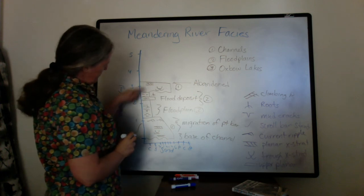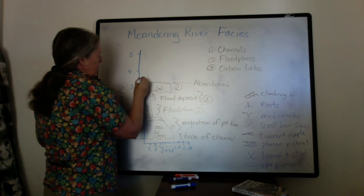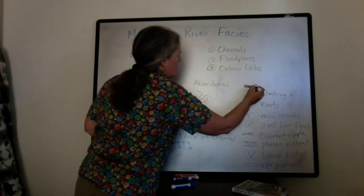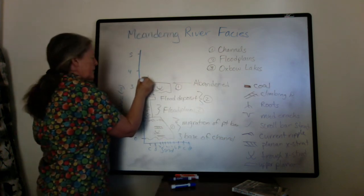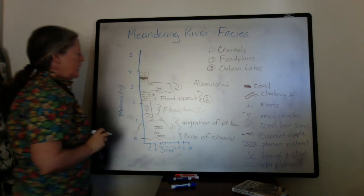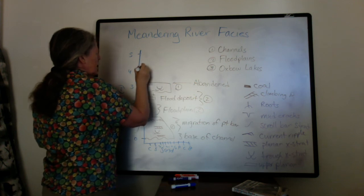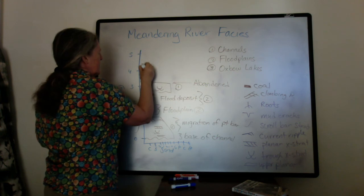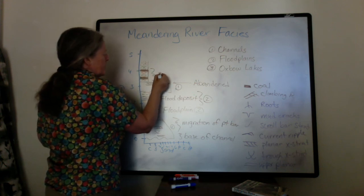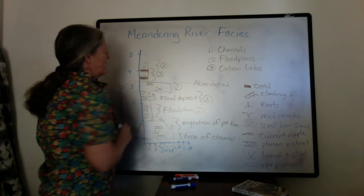The lake deposits are going to be very fine-grained with some mud but a lot of organic matter — I'll show bands of coal where you have very little mud coming in. Eventually the lake will fill in, and you might start getting some mud cracks and root casts again. This part would be your oxbow lake, and at some point it transitions back to having your floodplains.